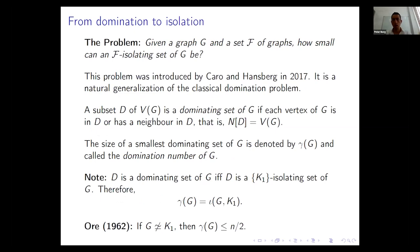The problem is: given a graph G and a set F of graphs, how small can an F-isolating set of G be? This problem was introduced by Caro and Hansberg fairly recently in 2017, and it is a natural generalization of the classical domination problem.